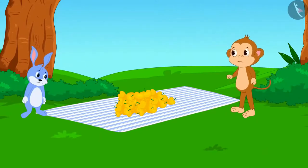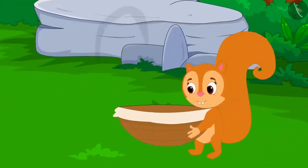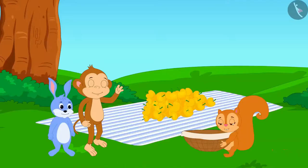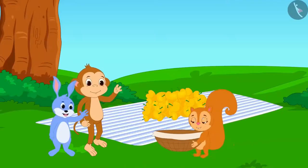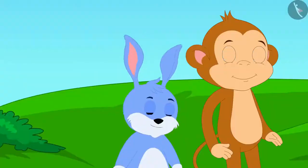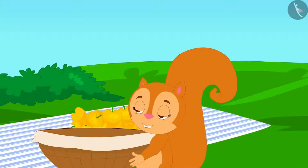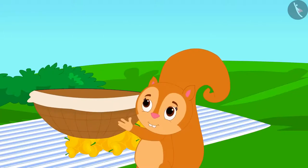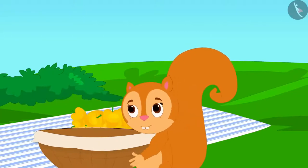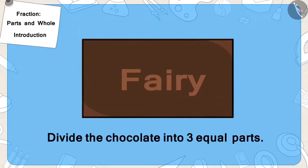Look, Chanda is passing by. She also has an empty basket. Babban and Bunny asked for her basket and told her the entire story. Chanda told them she could give them her basket, but she wanted an equal share of the chocolate. So now they have to divide the chocolate into three equal parts.